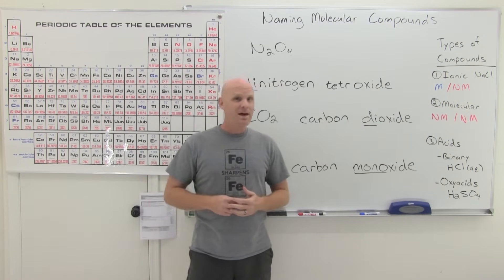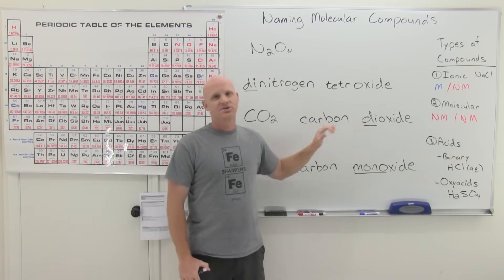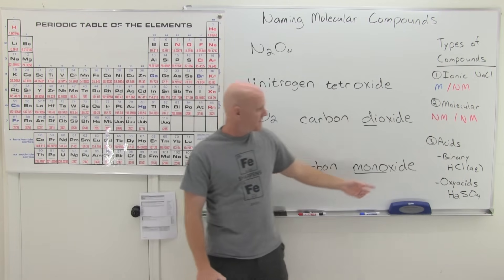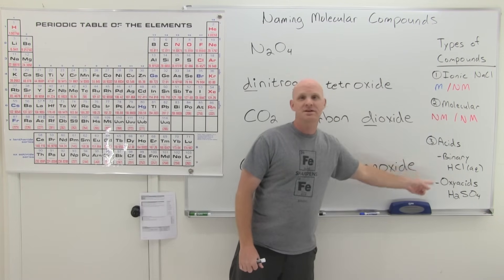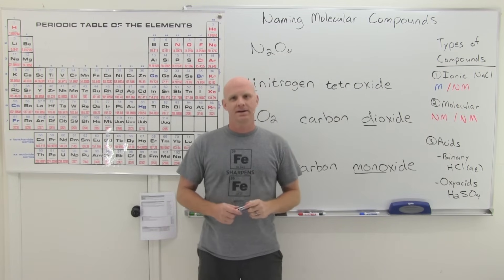Cool, that's it. That's all of naming binary molecular compounds. Like I said, much easier than naming ionic compounds. So in the next lesson, we're going to look at naming the two different types of acids. And that's going to add just one more wrinkle into this.